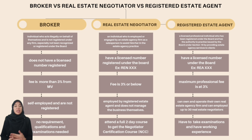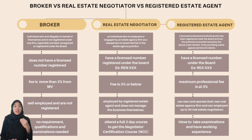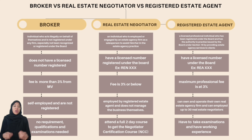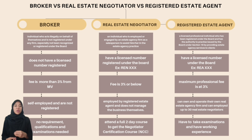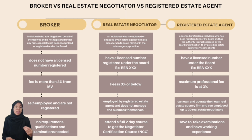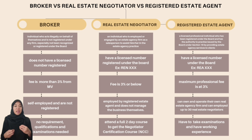In contrast, a real estate negotiator, or REN, is an individual employed or engaged by an estate agency firm as a salesperson to assist in estate agency practice. They possess a license number granted by the board with 'REN' in front of their negotiator ID. In terms of fee, they have a standard of 3%, but it may be below 3% as they divide it with the registered estate agent that supervises them. They operate under the immediate supervision of a registered estate agent and do not have the authority to independently list properties.